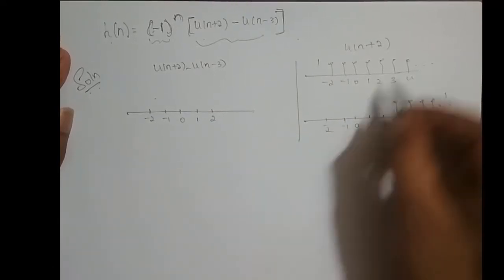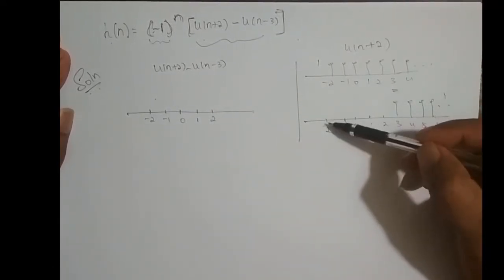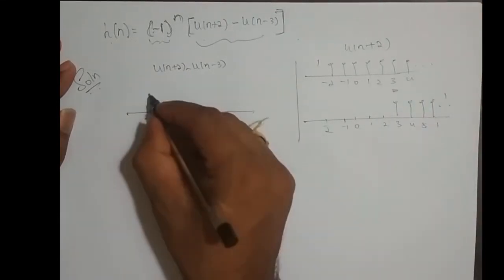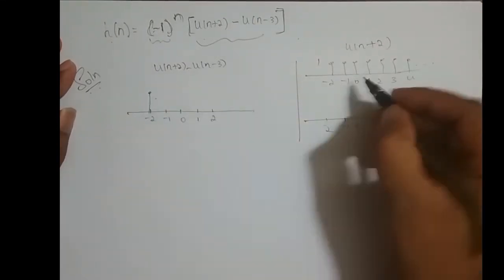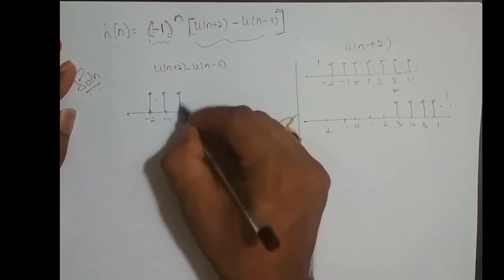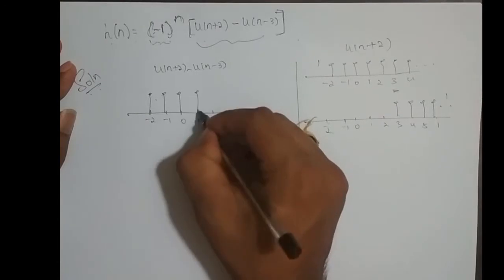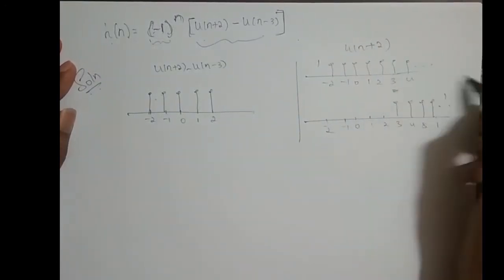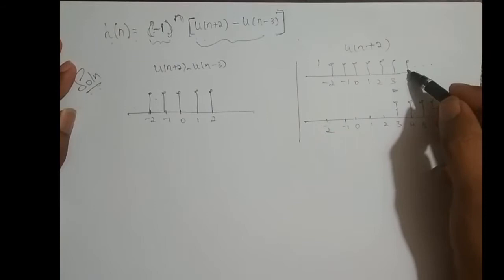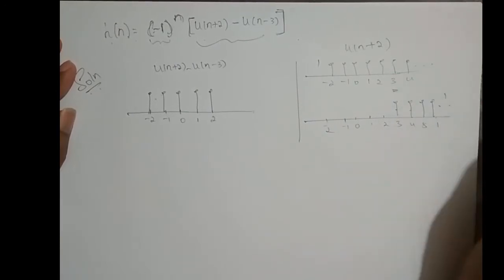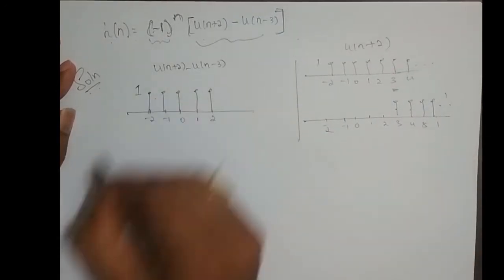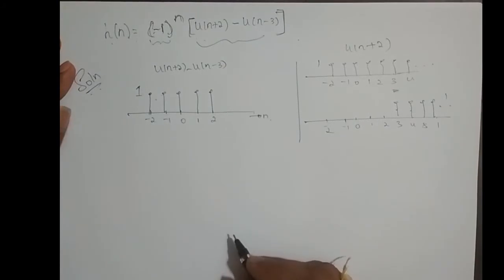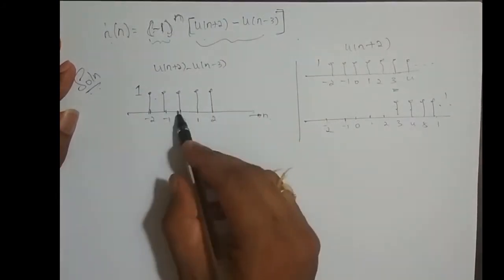If I subtract these two signals: 1 minus 0 is 1 at minus 2, at minus 1 it is 1, at 0 it is 1, at 1 it is 1, at 2 it is 1. At 3 it goes to 0 — 1 minus 1 is 0. And this is 0 forever. So this is u of n plus 2 minus u of n minus 3.